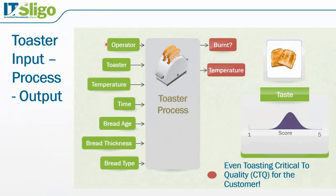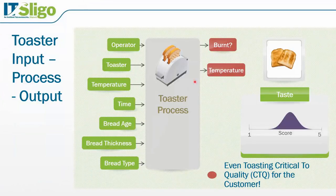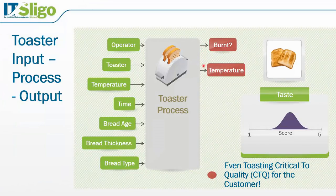Looking at the five M's — man, machine, material, method, and measurement — the man or woman is set as the operator, whoever's in charge of the toaster if you're working in a hotel, though many hotels have given this back to the customer now. We've got the toaster itself as the machine. We've got input variables such as time and temperature, which are critical. Maybe the age of the bread, the thickness of the bread or the bread type, the type of flour — so we've got a lot of variables there. Some we have control over, some we don't. Usually the main control we have is over time and temperature. The outputs are: is the toast burnt? And is the temperature of the toast warm enough? You could argue that one reason hotels have given this process to the customer is that they had very little control over some of these key output variables and critical to quality characteristics.